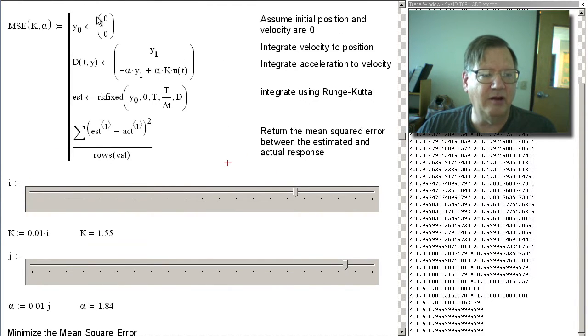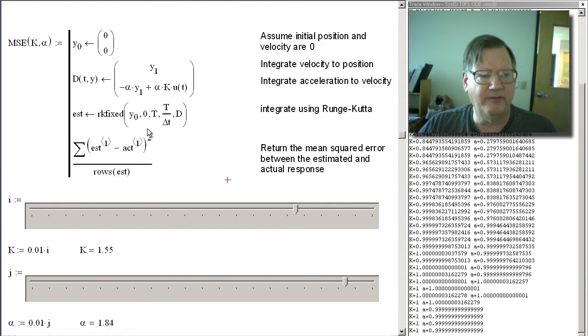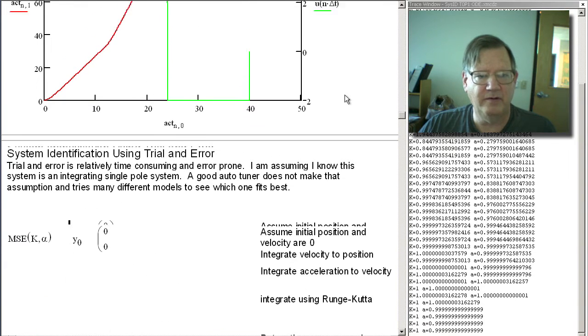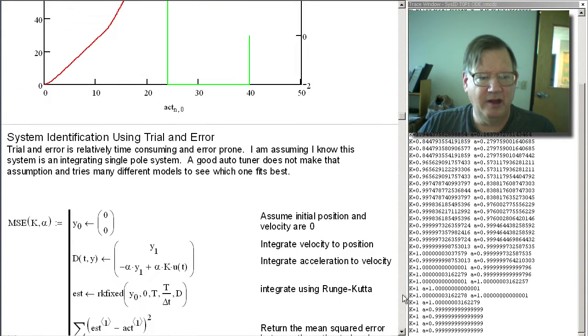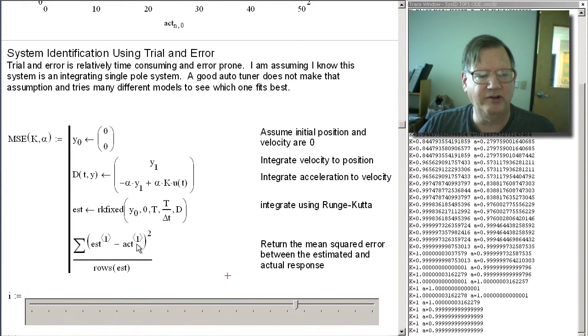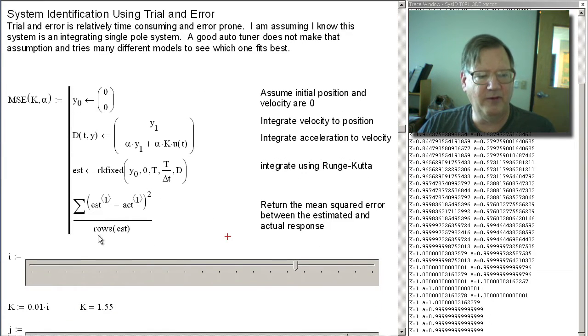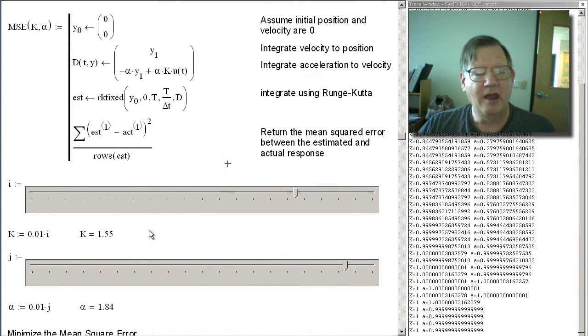Now, what I'm doing is I'm running through the simulation again. I'm assuming that the initial conditions are, you know, the position is 0, the velocity is 0. I'm executing the same differential equation. And then what I'm doing is I'm comparing the estimated response, which is what I'm trying to calculate here, and the 1 means it's the first column from up above here. That's the positions. And I'm comparing the estimated positions with the actual positions and dividing by the number of rows, which gives me the mean squared error. So what I'm trying to do is minimize the mean squared error.